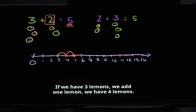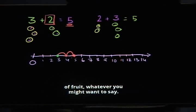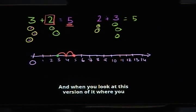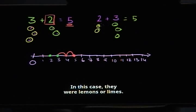If we have 3 lemons, we add 1 lemon, we have 4 lemons. We add another lemon, we have 5 lemons or lime or tart pieces of fruit. And when you look at this version of it, when you switch the order, we started at 2 and we're adding 3 objects to it — in this case lemons or limes.